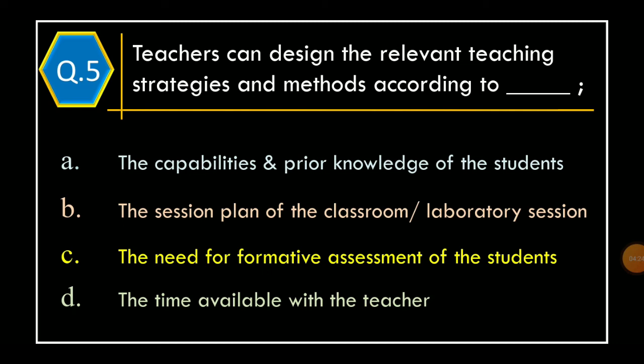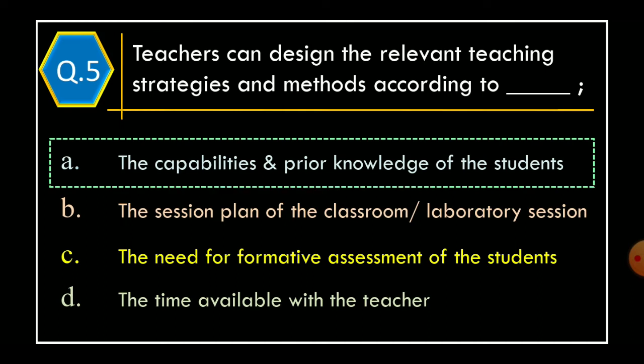Question 5. Teachers can design the relevant teaching strategies and methods according to: Option A – The capabilities and prior knowledge of the students. Option B – The session plan of the classroom or laboratory session. Option C – The need for formative assessment of the students. Option D – The time available with the teacher. The correct option is Option A: The capabilities and prior knowledge of the students.